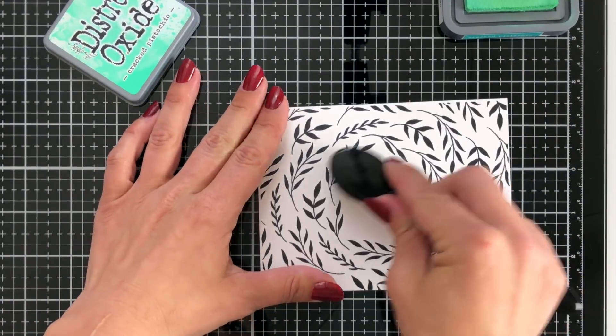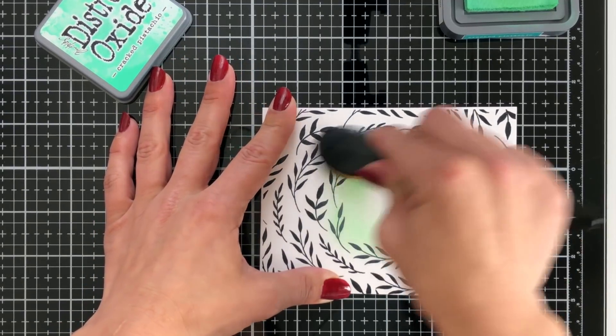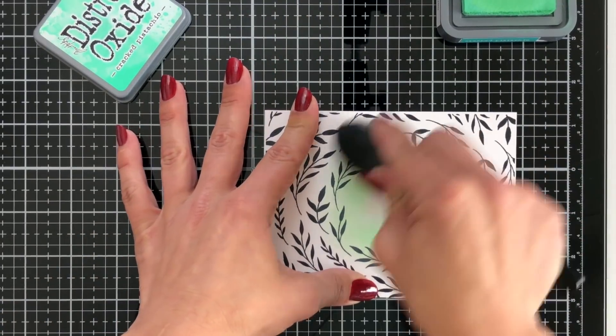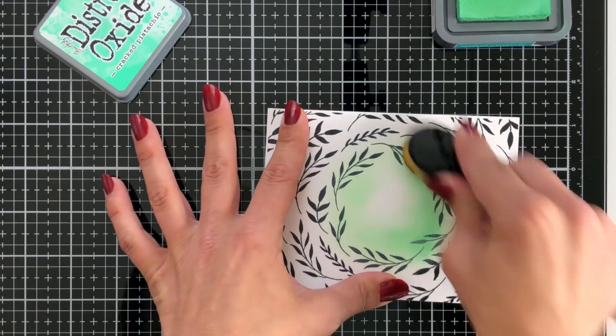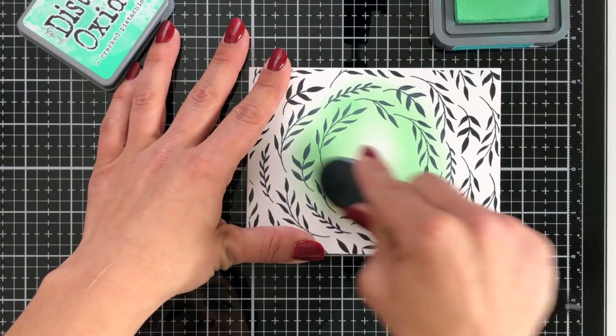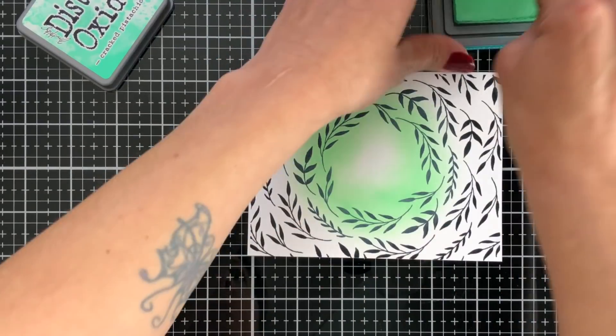Now this stamp set does also come with coordinating dies. It is going to cut out that middle piece. Now you could leave it if you wanted to and just stamp a sentiment. I'm going to be cutting this out so I'm not real worried about how good my ink blending is in that dead center of the card. I want to make sure that those leaves right around it are nice and covered with the ink.